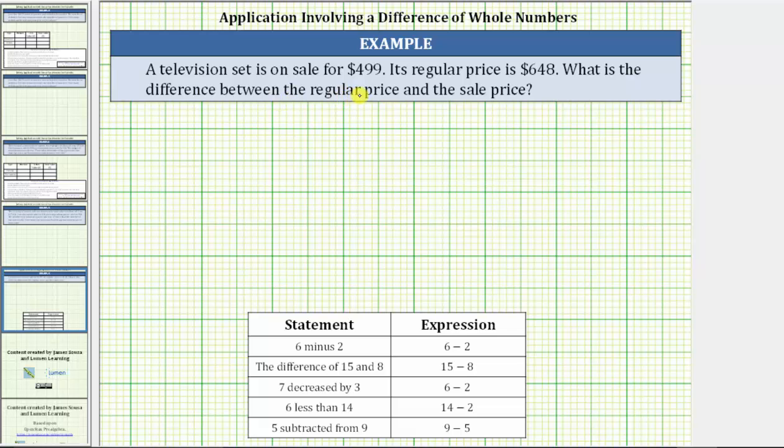The television set is on sale for $499. Its regular price is $648. What is the difference between the regular price and the sale price?